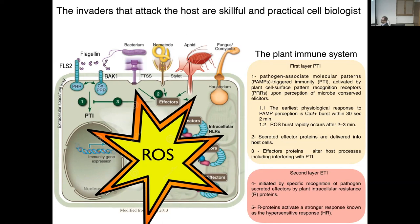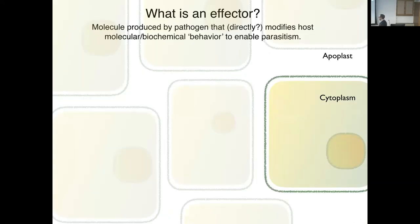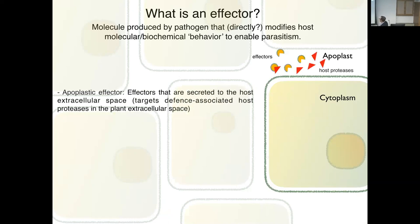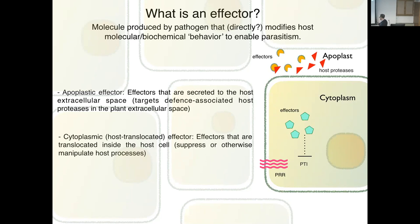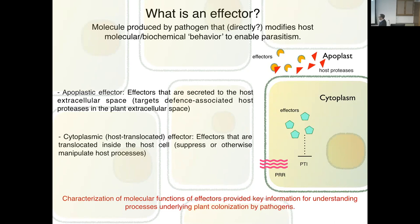So what are these effectors? Effectors are molecules produced by pathogens that modify host molecular behavior to enable parasitism. We have different kinds: apoplastic effectors secreted to the host extracellular space that can target host proteases, and cytoplasmic effectors translocated inside the cell that can suppress or otherwise manipulate host processes. Characterization of the molecular functions of effectors provides key information for understanding processes underlying plant colonization by pathogens — and this is what I'm doing with my research.